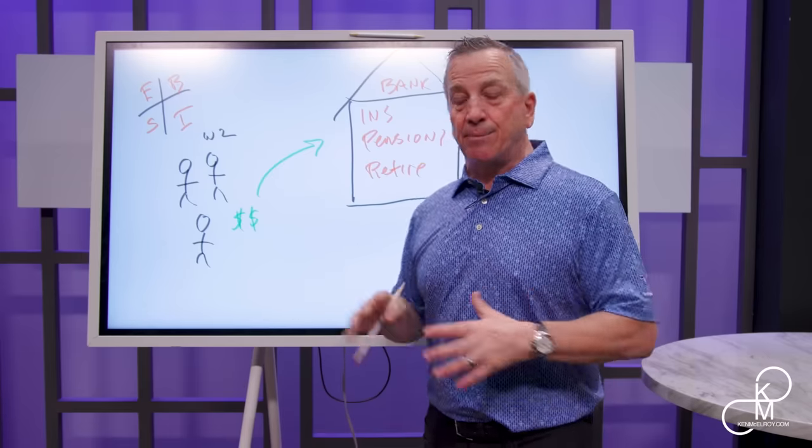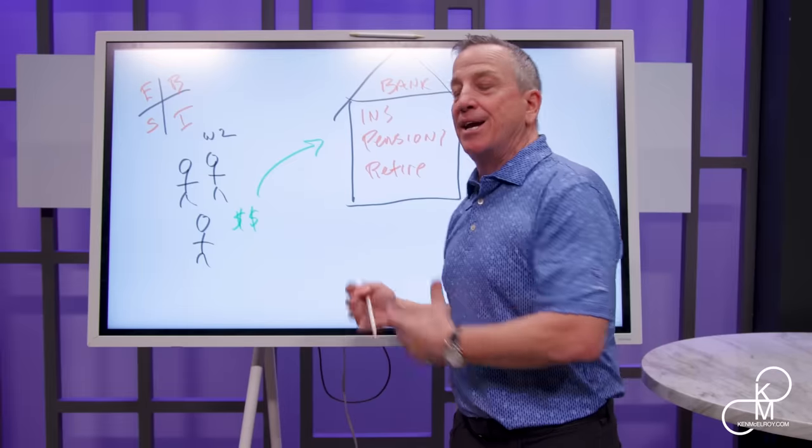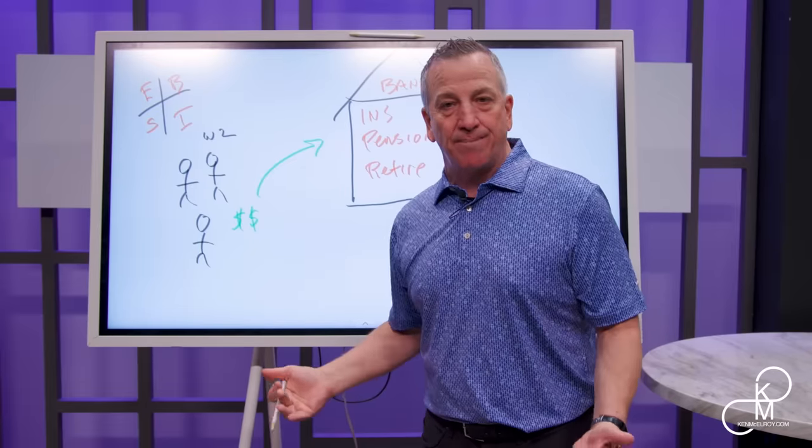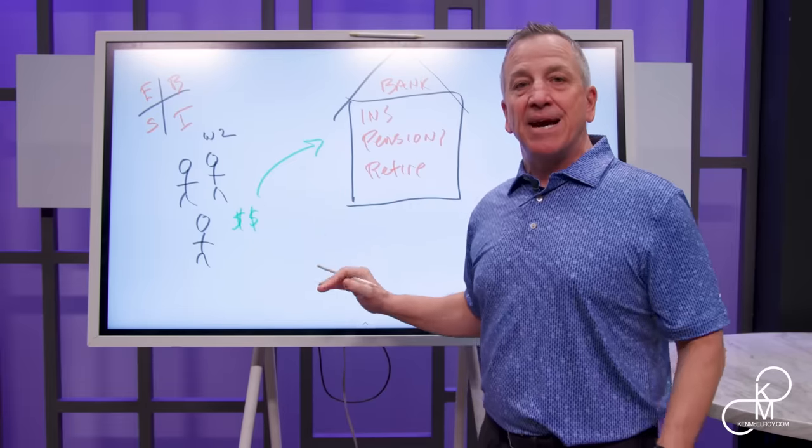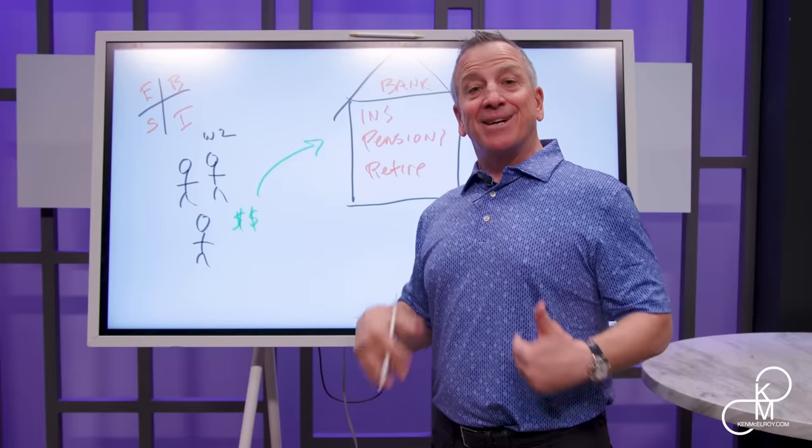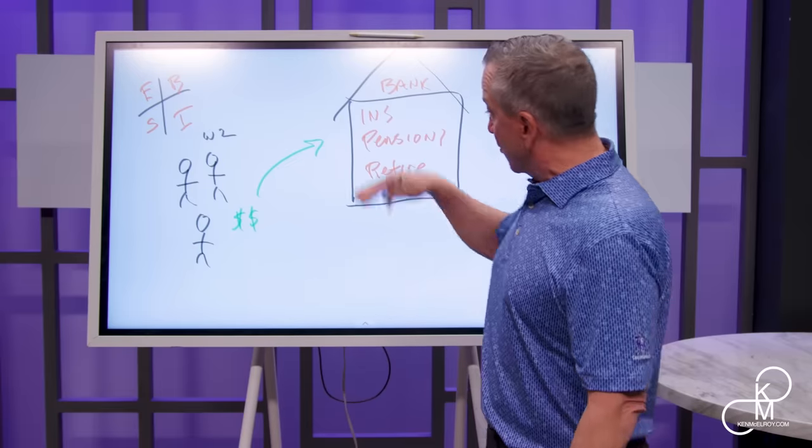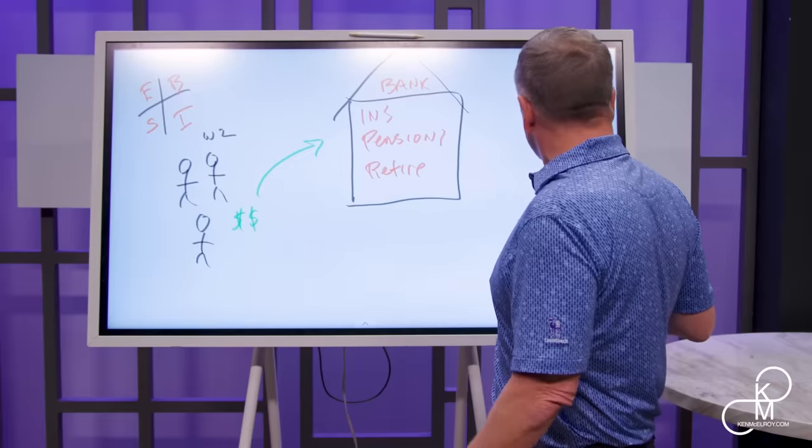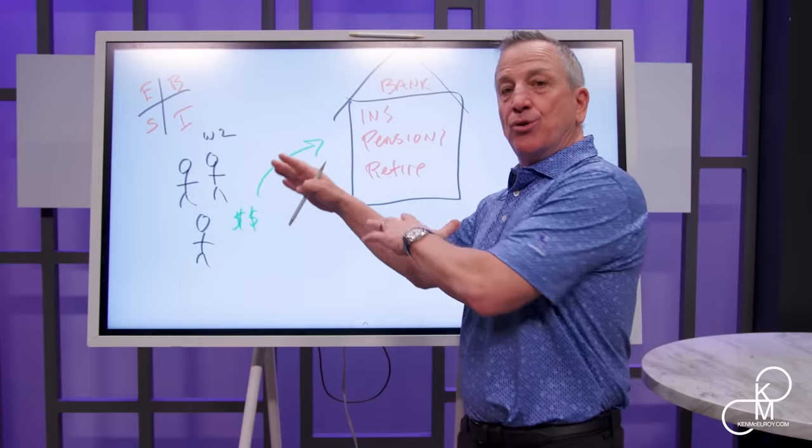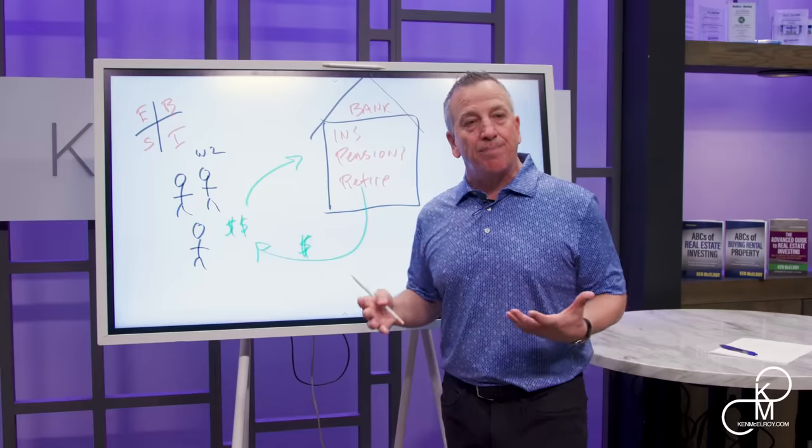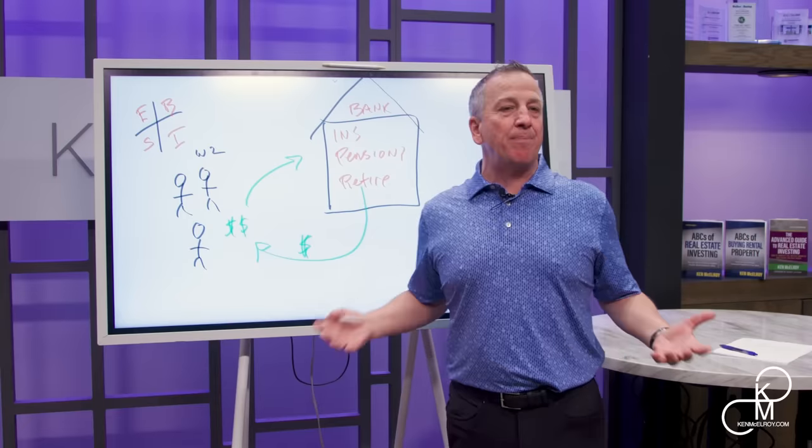And all of these systems are set up to take money from what I call Main Street. So money comes in from Main Street, and then guess what? The truth about money: it goes back out to Wall Street. And here's why. Because when you give money to any of these, they actually owe it back to you in some type of payment.